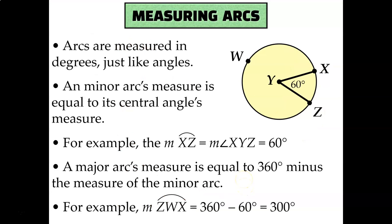The measure of an arc is equal to the measure of its central angle. So if the measure of angle XYZ is 60 degrees, then the measure of arc XYZ is also 60 degrees. You can calculate the measure of the major arc ZWX by subtracting from 360 degrees — a full circle is 360 — so arc ZWX would be 300 degrees, because 360 minus 60 equals 300.